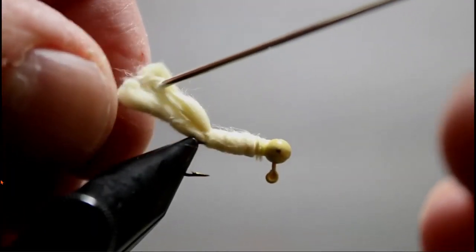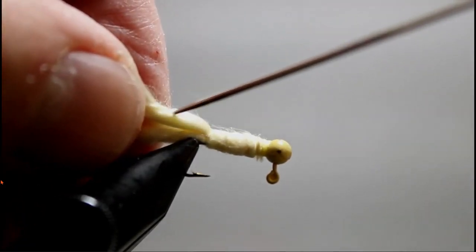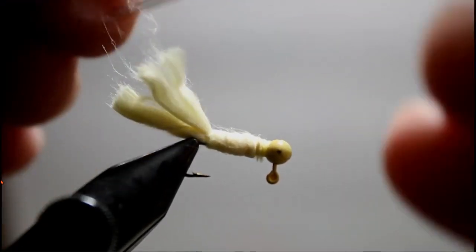Now grab something to brush out the tail with. Here Terry uses a fine tipped bodkin, then proceed to brush and fluff the tail as desired.